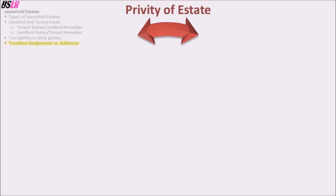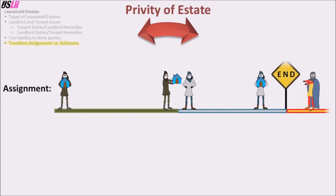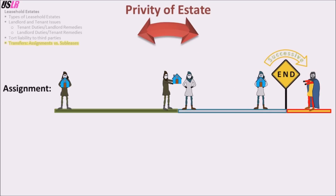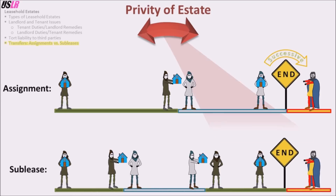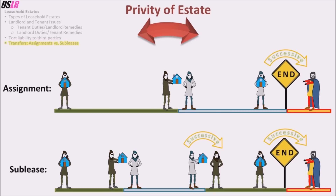In an assignment, the relationships change. After the assignment, the original tenant and the landlord are not in privity of estate because their interests are not successive. Instead, the new tenant and the landlord are in privity of estate because their interests are successive — the new tenant has the leasehold estate, followed by the landlord's reversion. In a sublease, the relationships change differently. The original tenant and the landlord maintain privity of estate because the sublease is only temporary, and the sublease must end before the original lease ends, so the original tenant eventually has the leasehold again. In addition, the original tenant and the new tenant are in privity of estate. Thus, the new tenant has a leasehold, the original tenant has a remainder, and the landlord has a reversion.